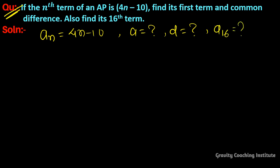So first we put n equal to 1. So a₁ is equal to 4 into 1 minus 10, so 4 minus 10 is equal to minus 6. So this one is the first term, so a is equal to minus 6, answer.